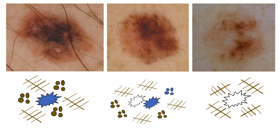The sclerosing nevus on the left is characterized by a combination of patterns — clods, lines reticular, and structureless — with brown and blue color. The lesion in the center is characterized by clods, usually brown and a few in blue color, structureless areas both blue and white, and brown lines and network. The lesion on the right is characterized by white structureless areas and brown network.